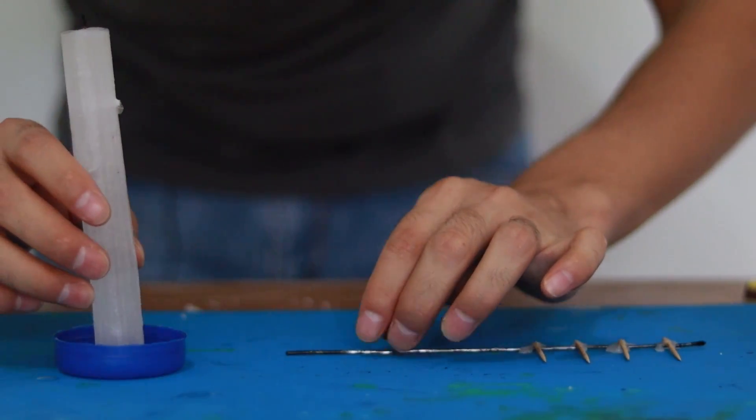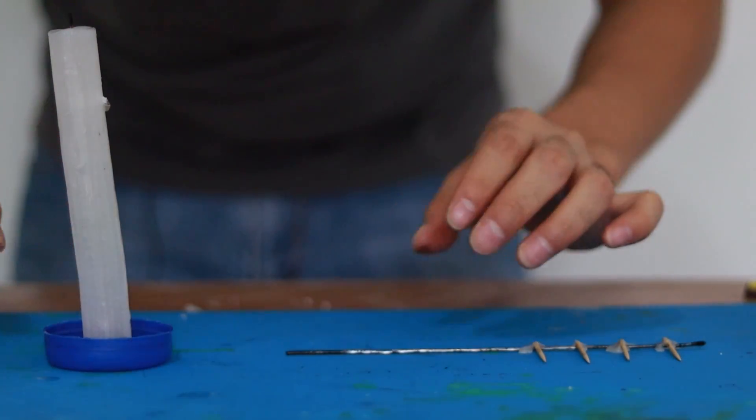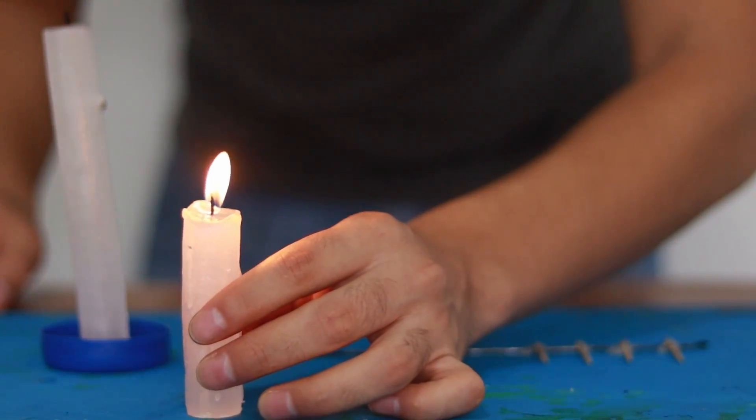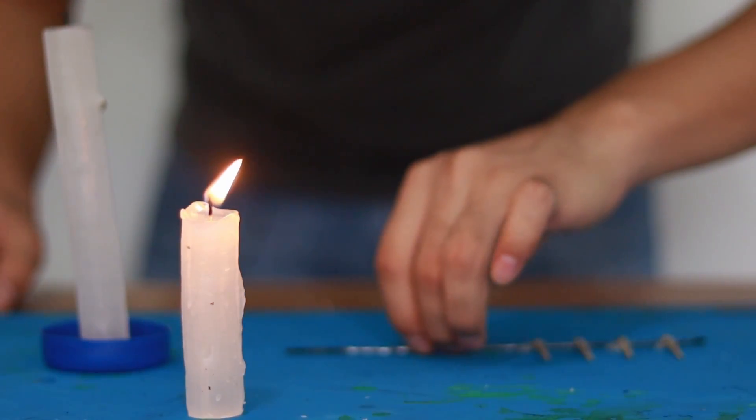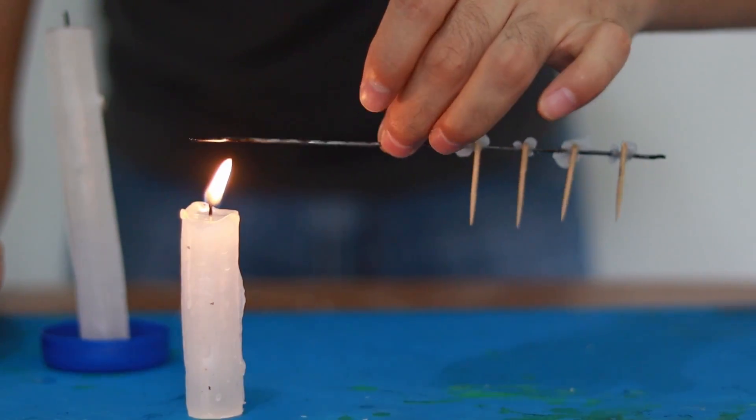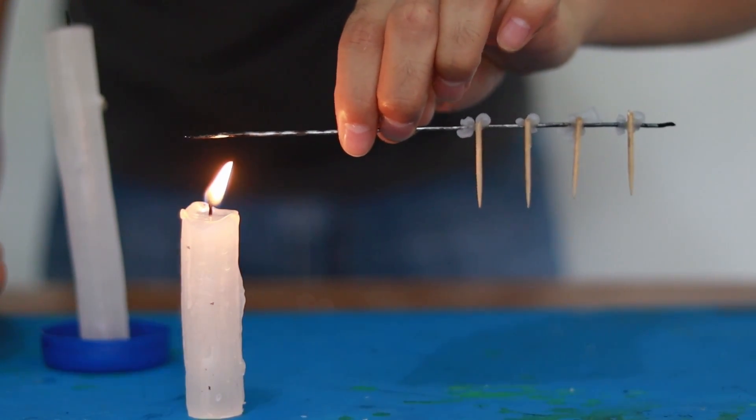Now we are going to bring our tallest candle. And with our smallest candle lid we are going to heat the opposite end to the one where the toothpicks are stuck.